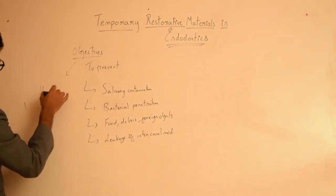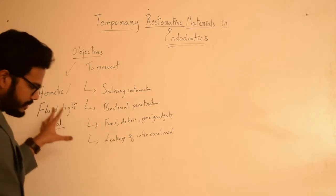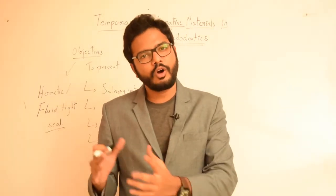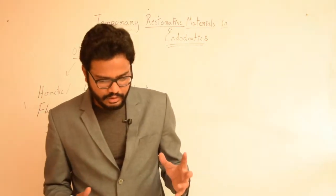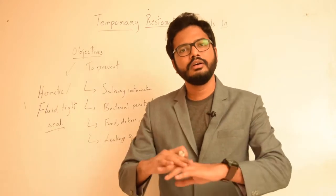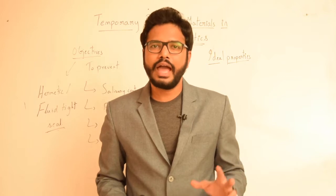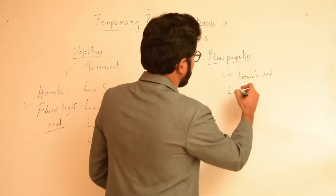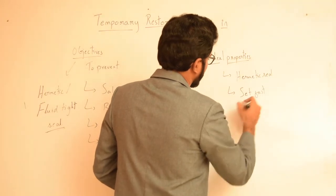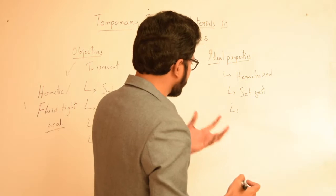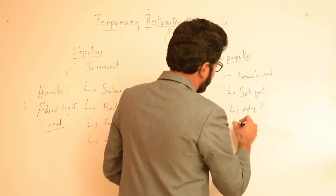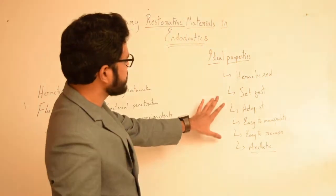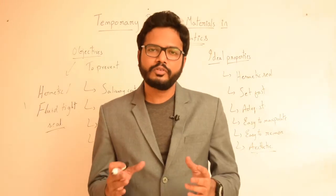The ultimate aim is to provide a hermetic or fluid-tight seal. The term 'hermetic' was named after a scientist called Hermes, who invented the process of making a glass tube airtight — hence it's called a hermetic seal. For any material to act as an ideal temporary filling, it should have the following properties: it should provide a hermetic seal, set fast within the oral cavity, have adequate strength to overcome masticatory forces, be easy to manipulate, easy to remove at the next appointment, and should be tooth-colored.